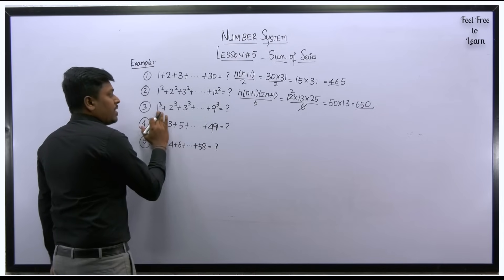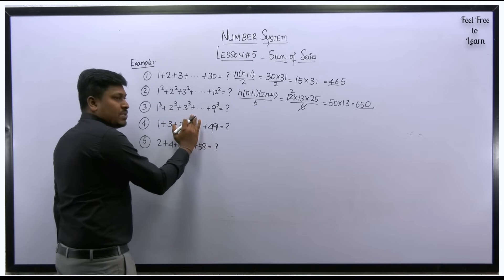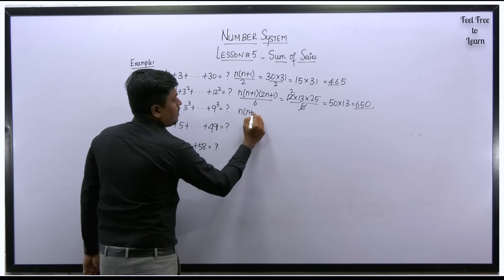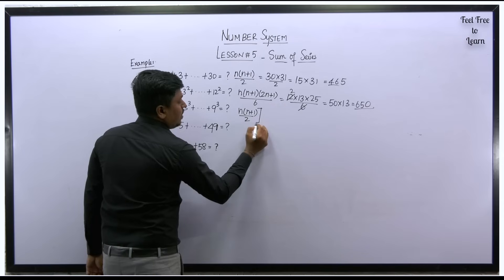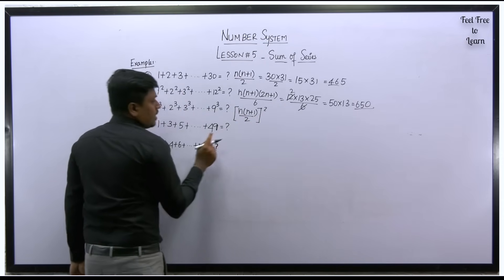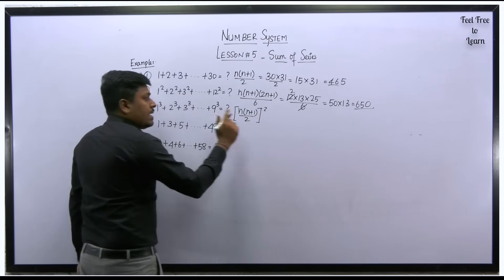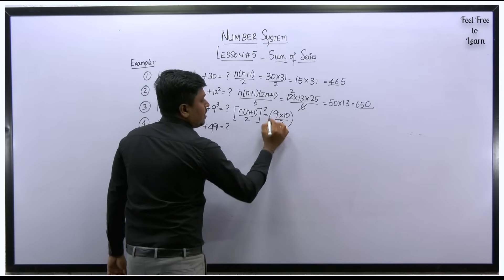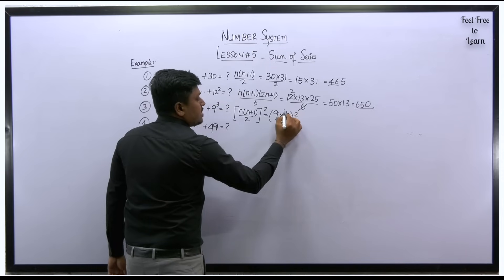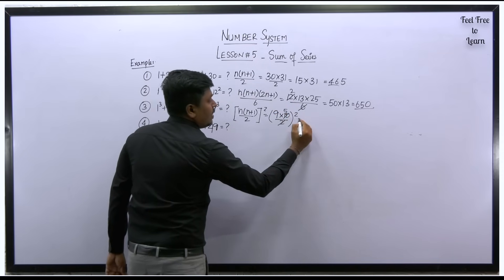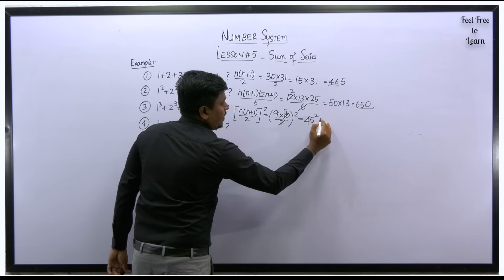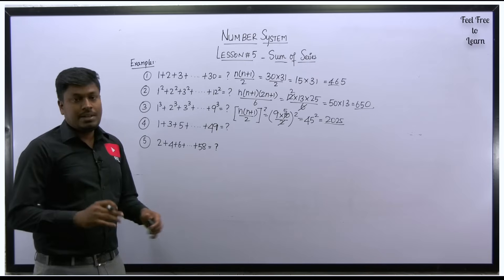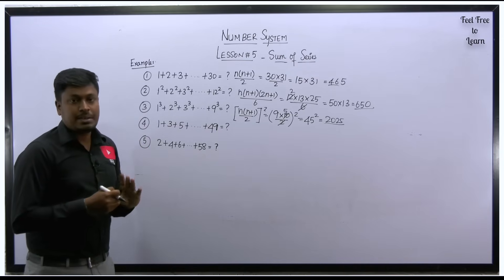Question 3: 1 cube, 2 cube, 3 cube — it's model number 1, third category. Formula: n into n plus 1 divided by 2, the whole square, where n equals 9. So 9 into 10 divided by 2, the whole square — this becomes 9 into 5 equals 45, and 45 squared equals 2025. So 2025 is the sum of series for question 3.